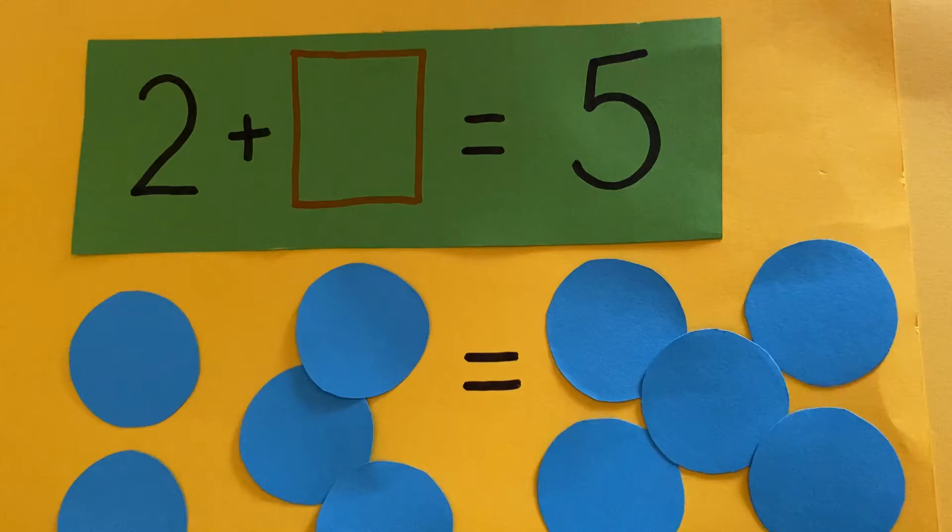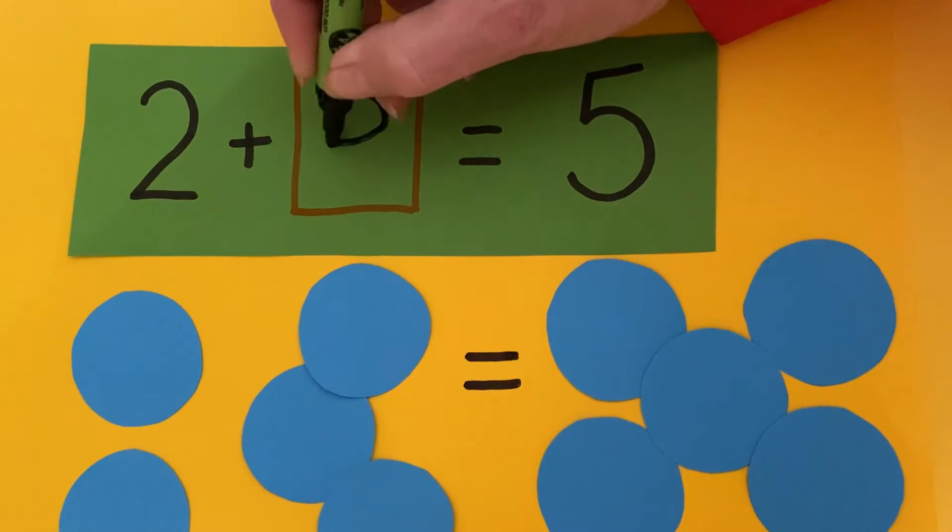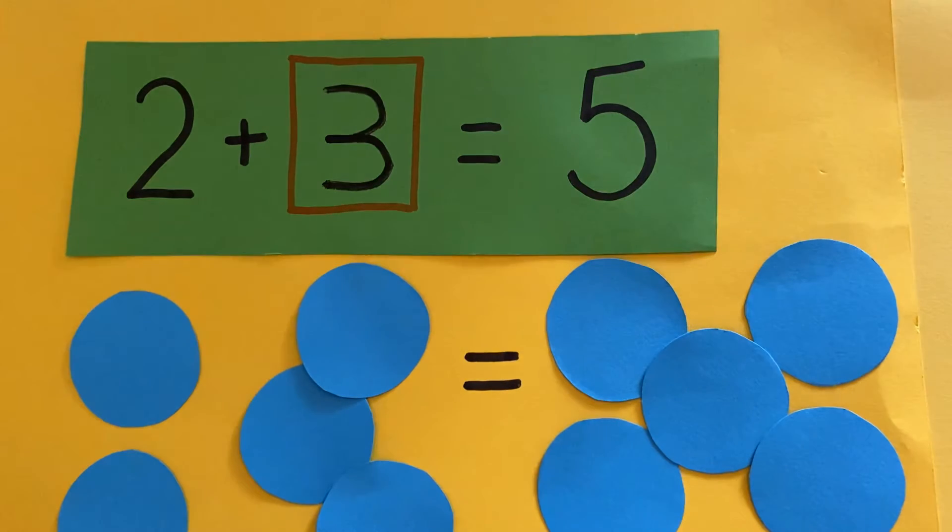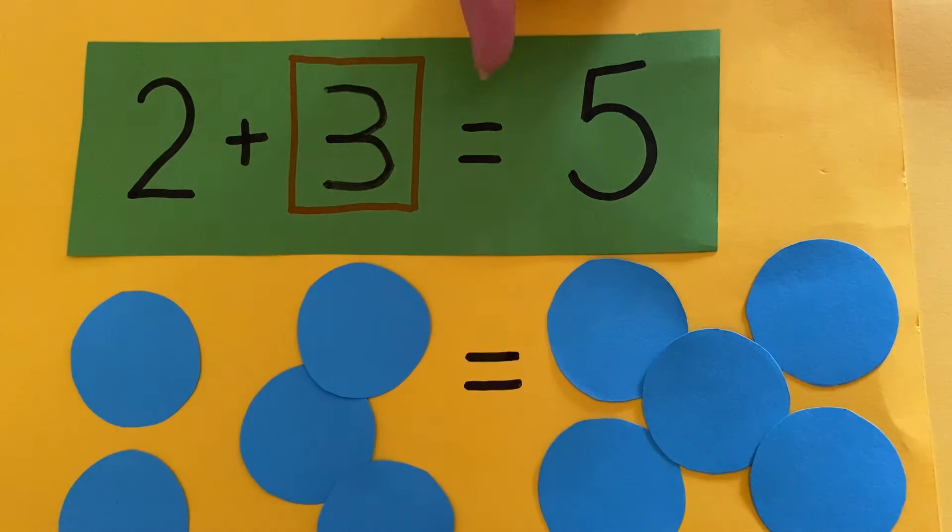That's right. I added three. The missing number must be three. Two add three equals five. Two add three is the same as five.